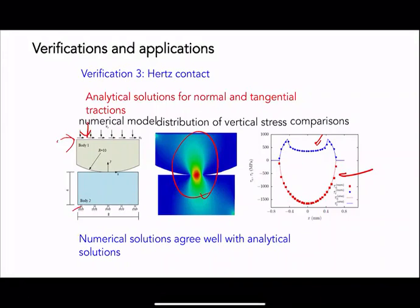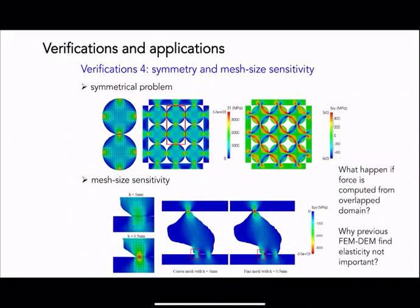We also check whether the method preserves symmetry. In this problem, we have the analytical solution for a spherical particle with four perfect contacts in a periodic domain, and we check whether we can recover the shear stress field in the xy direction and the analytical periodic pattern. The result looks very promising.